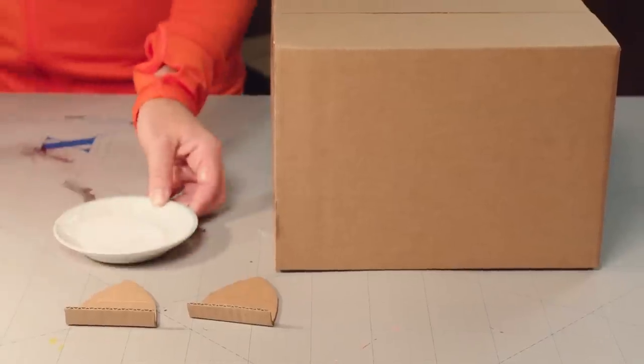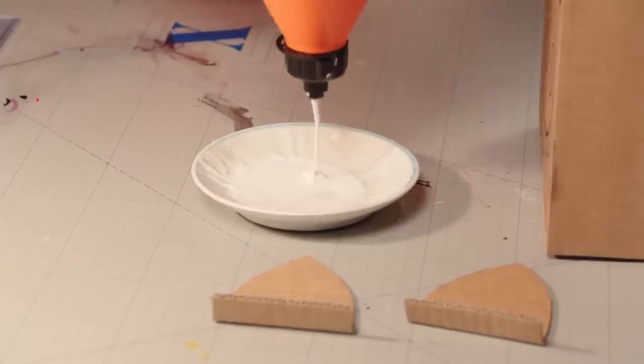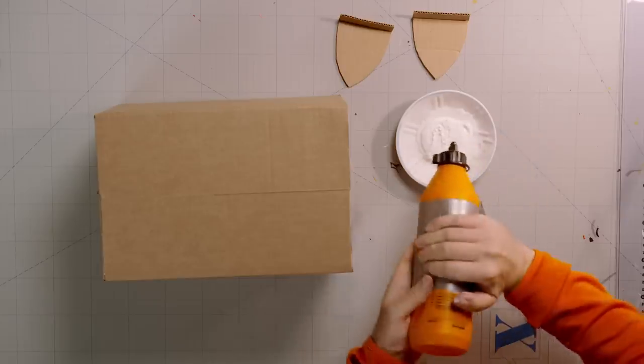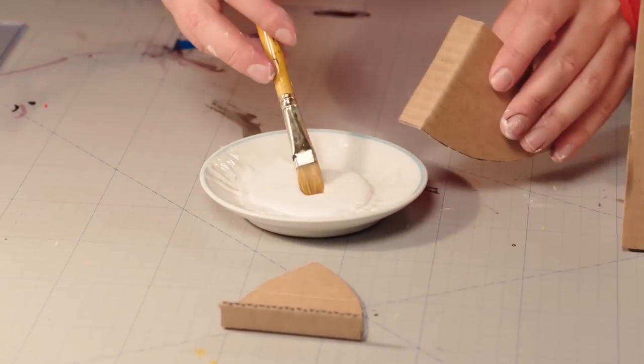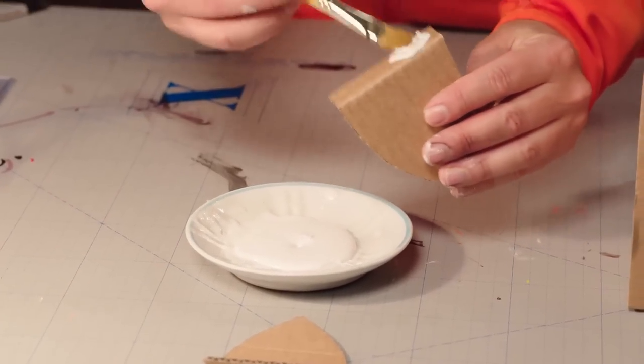It's good to put some glue into a bowl. You can dip stuff in or use a brush. Let's dab a bit of glue on the flaps and glue the ears on.